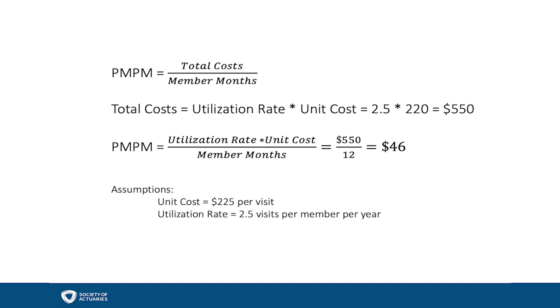These input values would typically be measured from historical data, although adjustments may be considered for trends in the utilization rate, expected shifts in the risk level of the population, changes in benefit design, or changes in coverage. A projected PMPM is the product of the utilization rate and the unit cost for a given service.